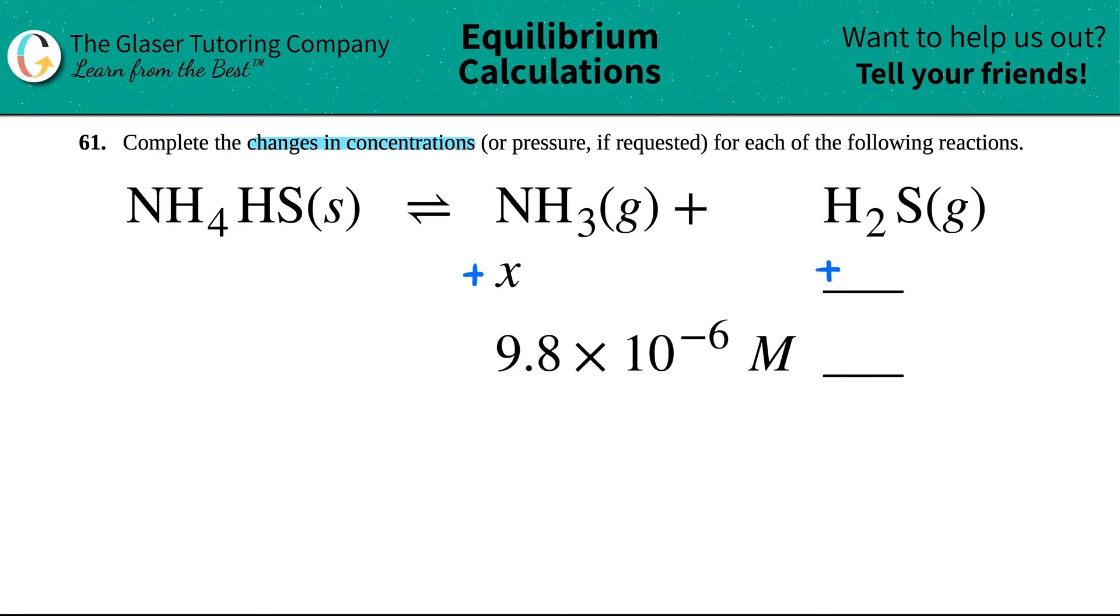Well, that comes from the coefficients. If we look here, in front of the NH3, there was one NH3, and in front of the H2S, there was also one. So the number that goes in front of the X is going to be your coefficient. So technically, this was plus 1X, but anytime that we say plus 1X, it's easier to just say plus X. So the same thing goes here. This was plus 1X because the coefficient is 1, but plus 1X is the same thing as saying plus X. And now they look identical, because they're a one-to-one ratio.